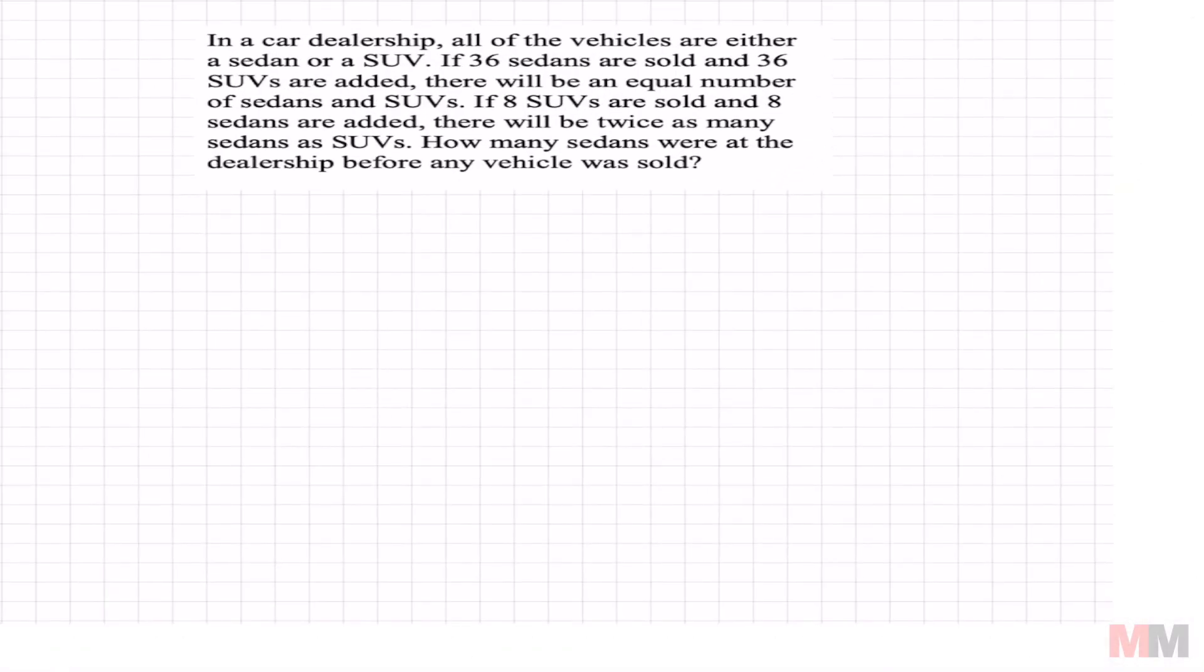Like I mentioned, the first or second sentence always reveals what your variables are going to be. This is comparing sedans and SUVs. I'm a simple guy. I always just choose x and y. Let x be sedans and y equals my SUVs. If 36 sedans are sold and 36 SUV are added, there will be an equal amount of sedans and SUVs. Second part is, if eight SUVs are sold and eight sedans are added, there will be twice as many sedans as SUVs. That's going to go together. The question is, how many sedans were at the dealership? We're solving for x this time.